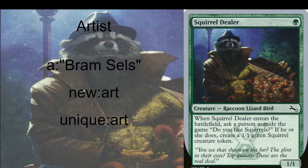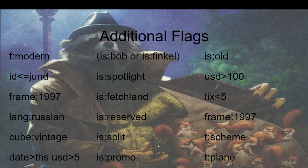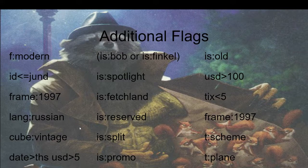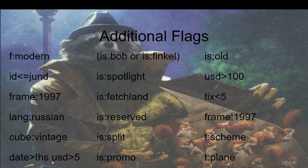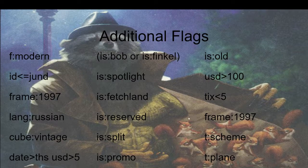Last but not least we have our artist. You can do a partial match on the name, or put it in quotes for a perfect match. We also get a couple of unique flags like 'new art' if we're getting a reprint with new art, or 'unique art' if we're looking at a specific card like Lightning Bolt and want to see all the different arts printed on it. Some additional flags you can use include: formats, identities for Commander, frames if you like old frames, language, cube — for example searching 'cube:vintage' pulls up all the cards from MTGO's Vintage Cube. You can also search by date, set, price with USD greater than a value, split cards, reserve list cards, and if something's a scheme or a plane.